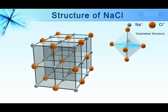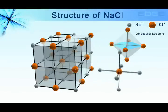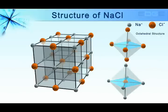If we extend the cubic structure, we can also see that each Cl ion is octahedrally surrounded by 6 sodium ions.